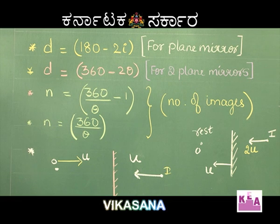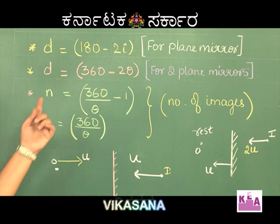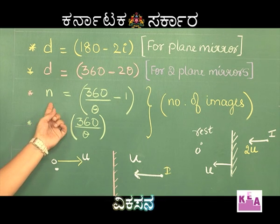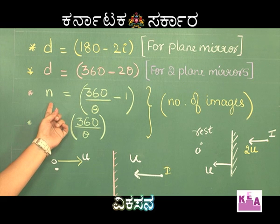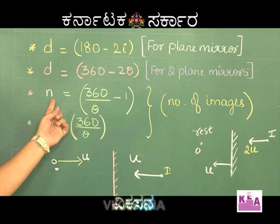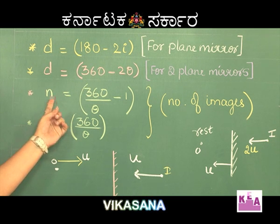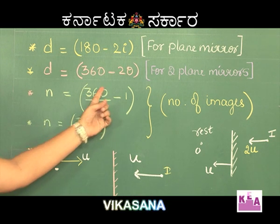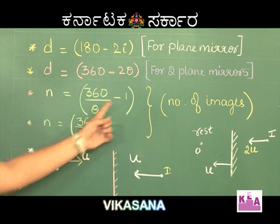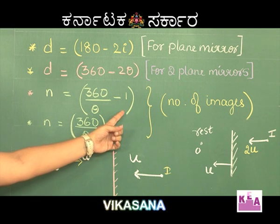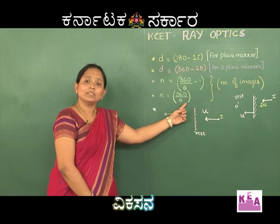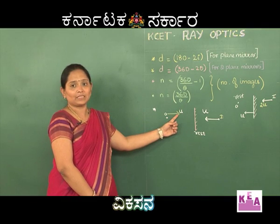Moving on, we can also find out the number of images formed by a plane mirror inclined at an angle theta using the formula n = (360/θ) − 1, and in another case n = 360/θ.